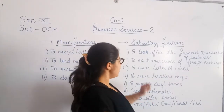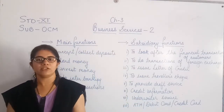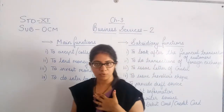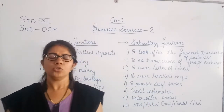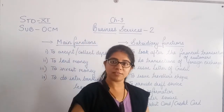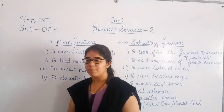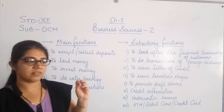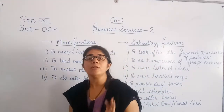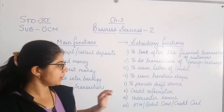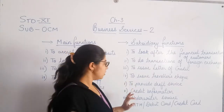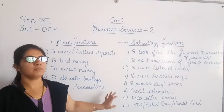The sixth subsidiary function is that the bank provides credit information to various people. For example, if I am a regular customer with a good bank balance, other parties can inquire with the bank whether this person is a regular customer and whether their financial standing is stable. The bank provides this credit information, generally to those who come to the bank and request it.